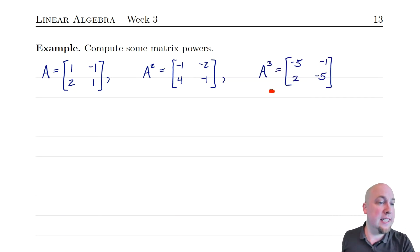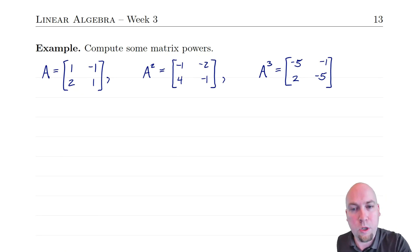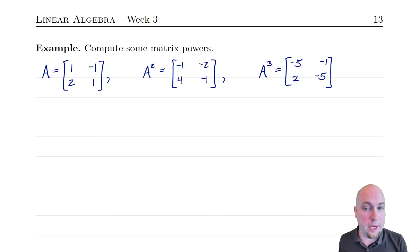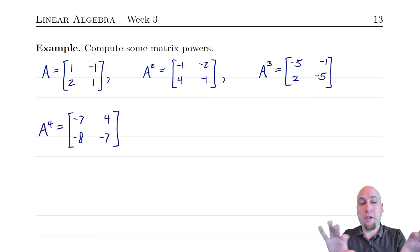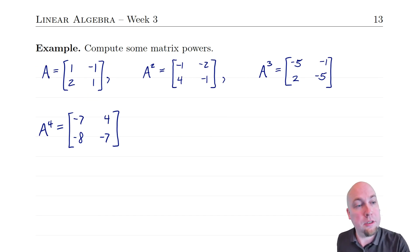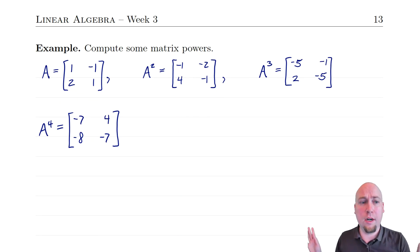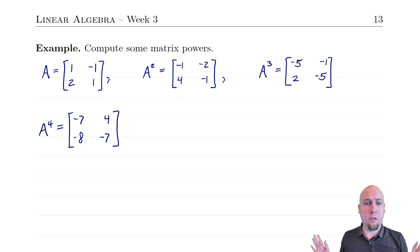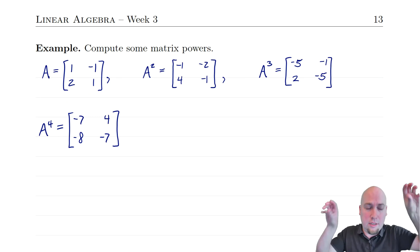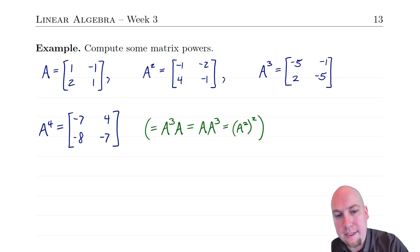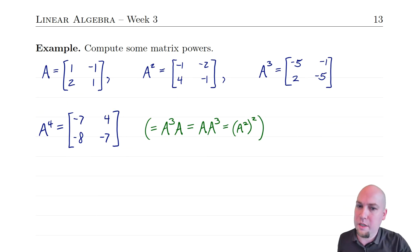For A to the power of 4, there are actually multiple ways to compute it based on what we've computed so far: we could multiply A by A cubed, or A cubed by A, or A squared times A squared. As long as the powers add up to the right number, you'll get the right answer. No matter which approach you use, you get the same result.